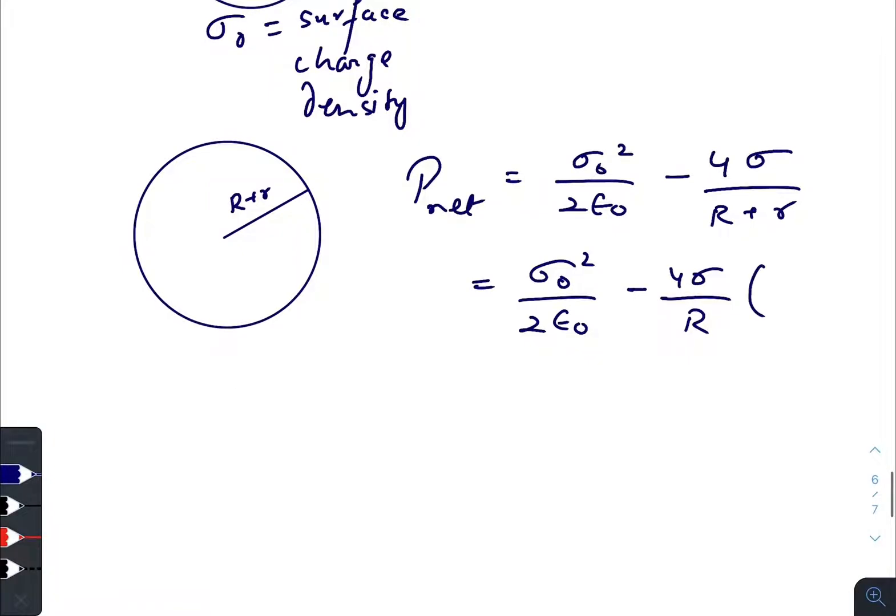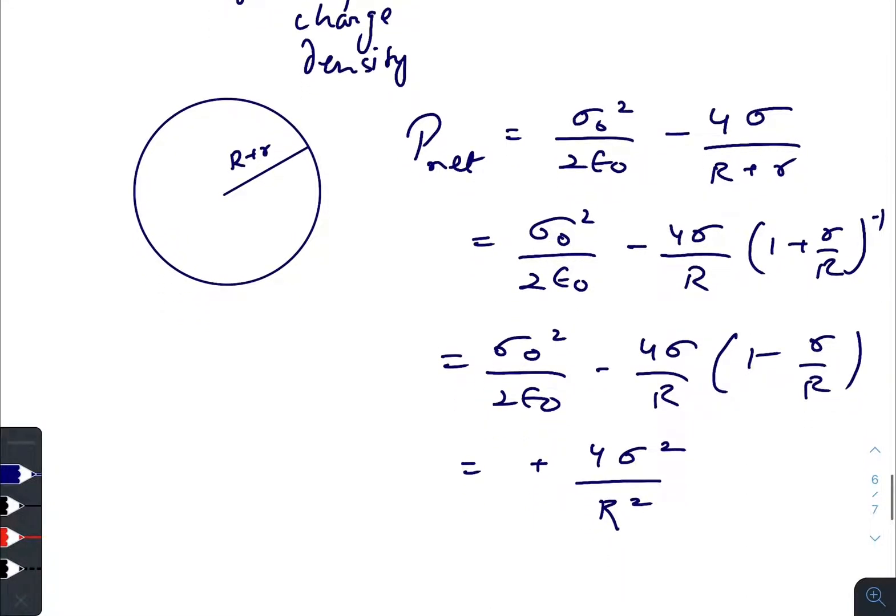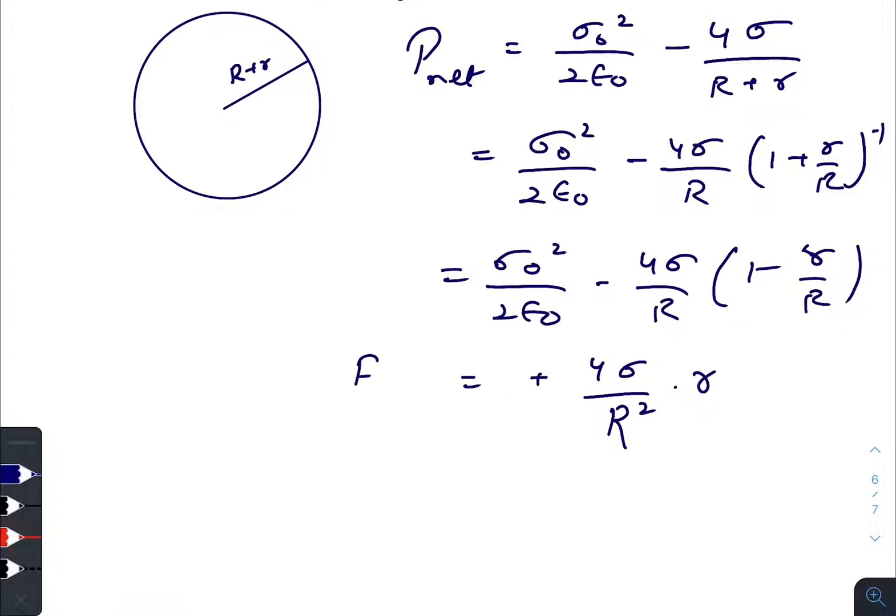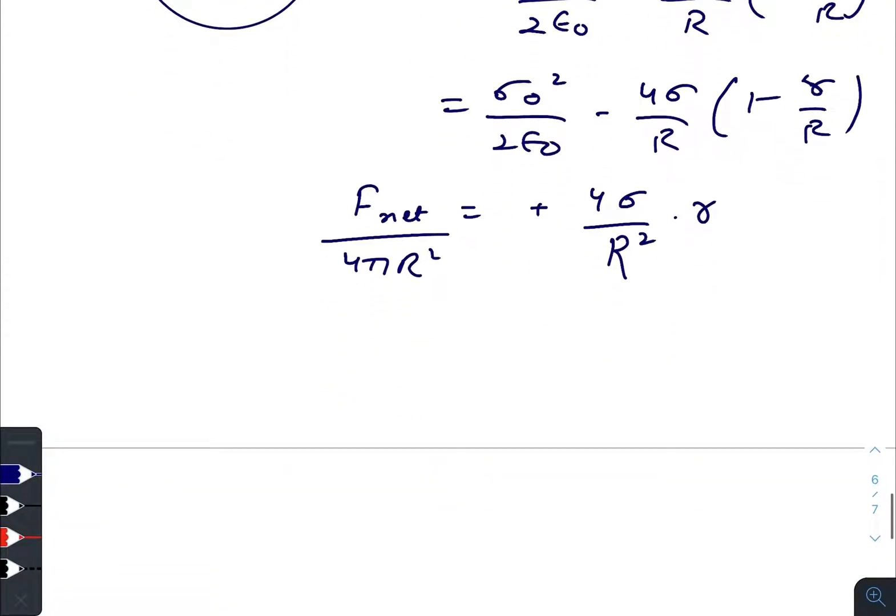Taking R and writing like this, doing binomial expansion, basic stuff, you finally get 4 sigma divided by R squared times r. This pressure creates an excess force, so we get net force equals 16 pi sigma times r.